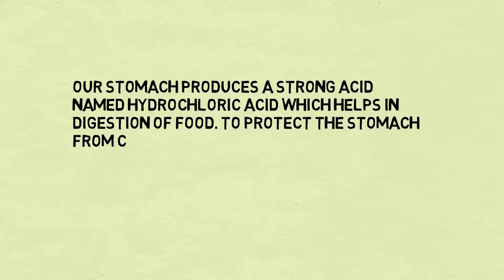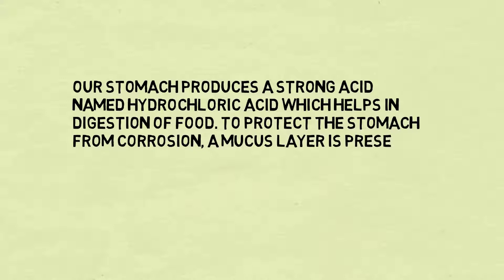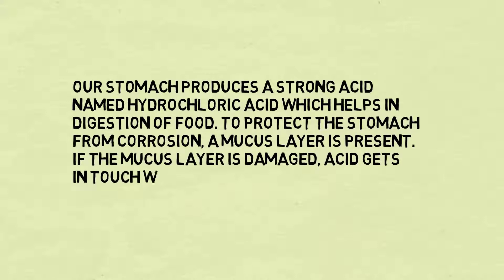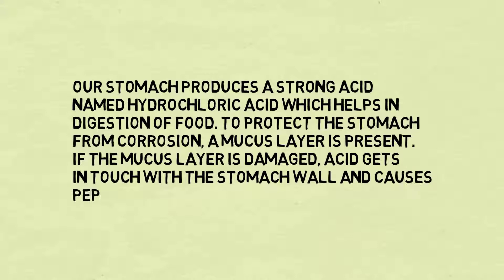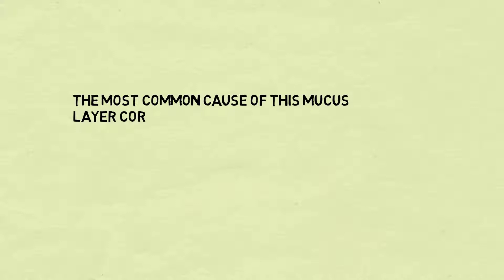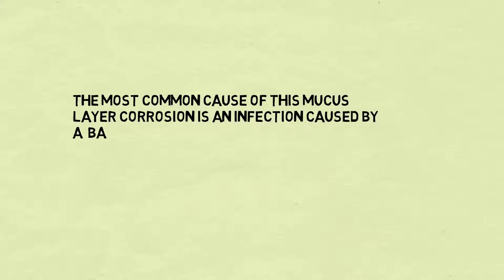Our stomach produces a strong acid — hydrochloric acid — which helps in digestion of food. To protect the stomach from corrosion, a mucous layer is present. If the mucous layer is damaged, the acid gets in touch with the stomach wall and causes peptic ulcer.